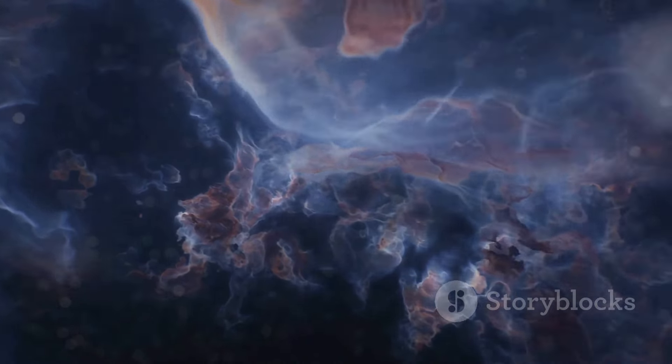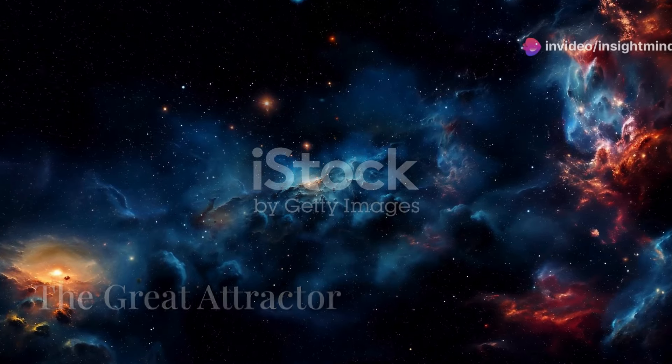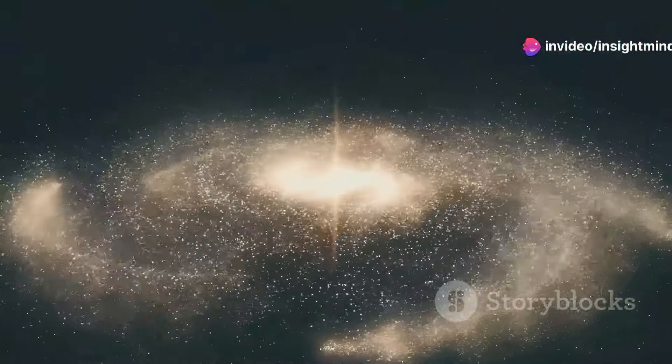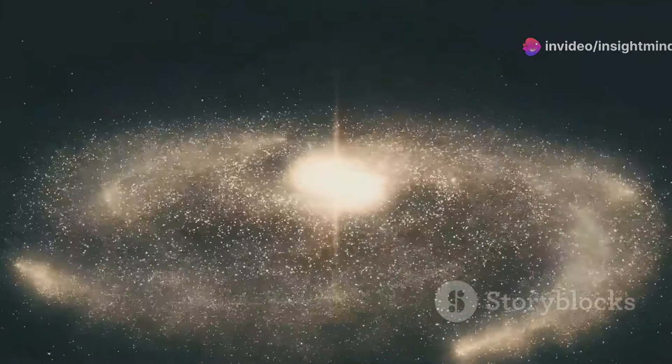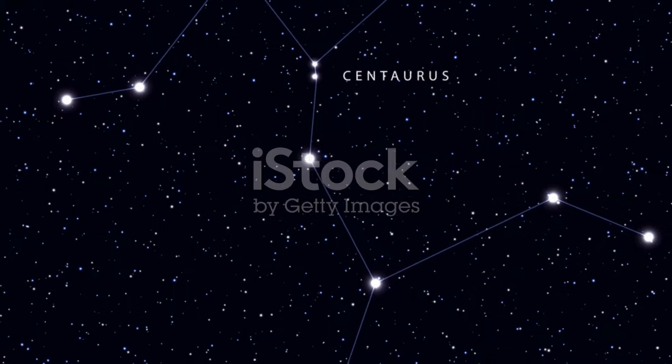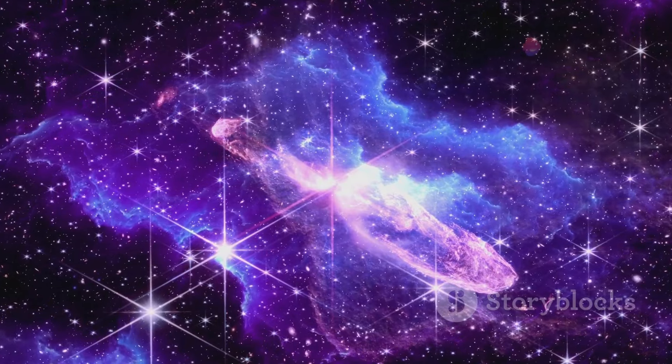Our first stop is the Great Attractor, a mysterious gravitational anomaly located about 150 million light years away in the direction of the constellation Centaurus. This massive region of space is pulling galaxies, including our own Milky Way, towards it at an astonishing speed of 600 kilometers per second.